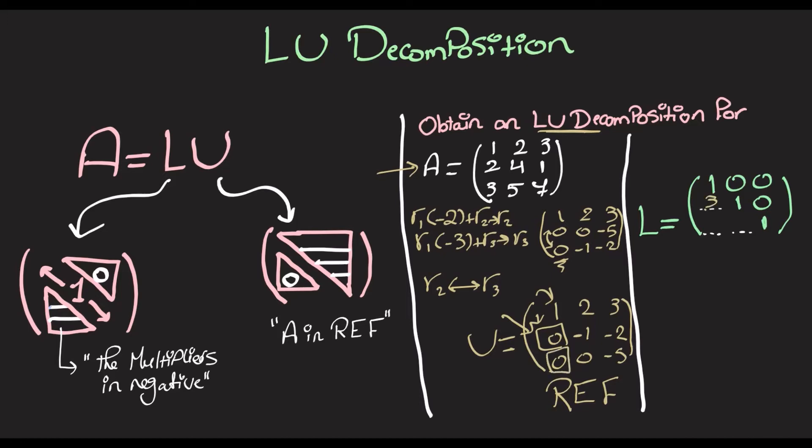And to get this 0, we multiplied this one by negative 2. So, this is going to be 2. To get this 0, we didn't multiply any leading variable in this column by any number. So, it's basically going to be 0. So, this is L, and this is U.